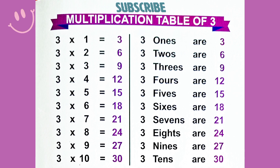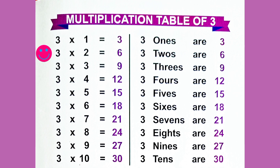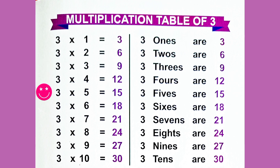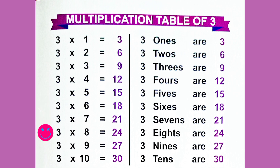Multiplication Table of 3. 3 into 1 is equal to 3. 3 into 2 is equal to 6. 3 into 3 is equal to 9. 3 into 4 is equal to 12. 3 into 5 is equal to 15. 3 into 6 is equal to 18. 3 into 7 is equal to 21. 3 into 8 is equal to 24.